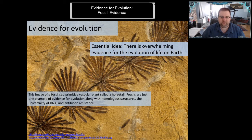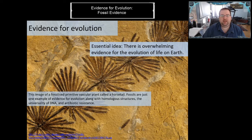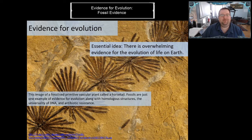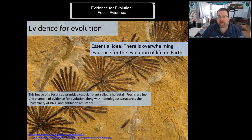Hello everybody and welcome to another episode of Biology with Mr. Emond. Today we're going to be looking at the evidence for evolution. We are starting our new unit on evolution and we're going to be focusing primarily today on the fossil record and fossil evidence. Our main idea for this outcome is that there's an overwhelming amount of evidence for the evolution of life on earth. Today we're going to look at the fossil record, but in future lessons we're going to be looking at other lines of evidence as well.